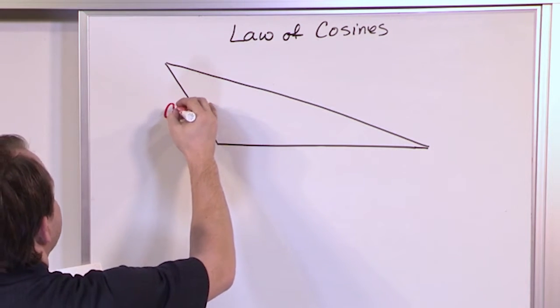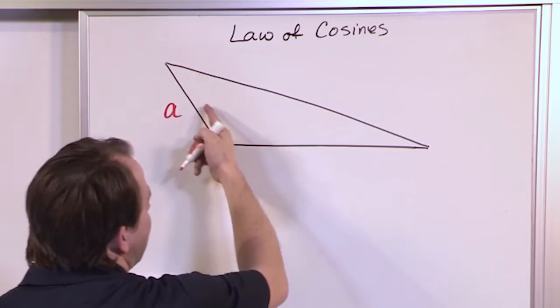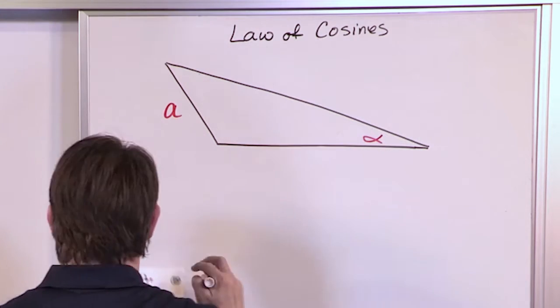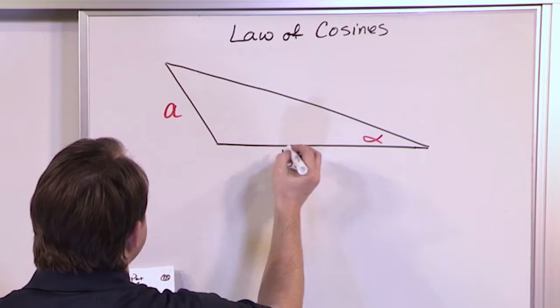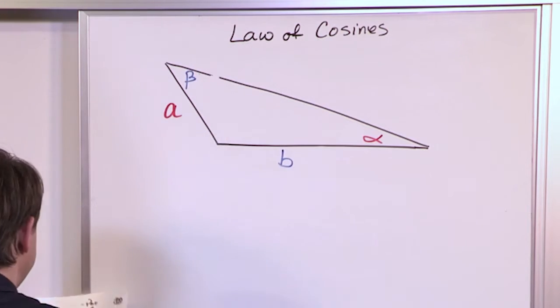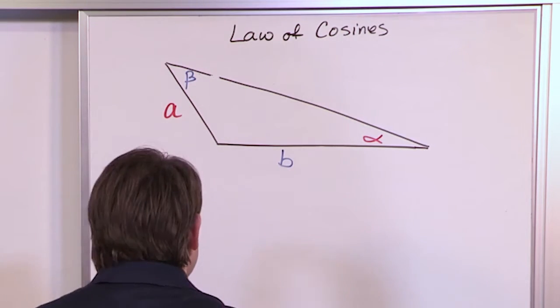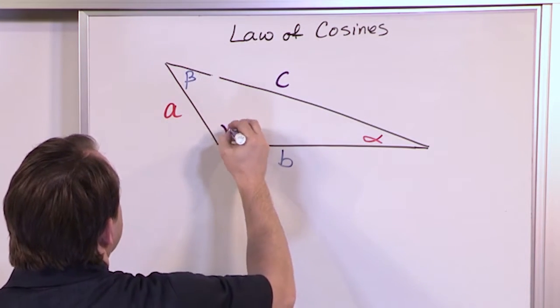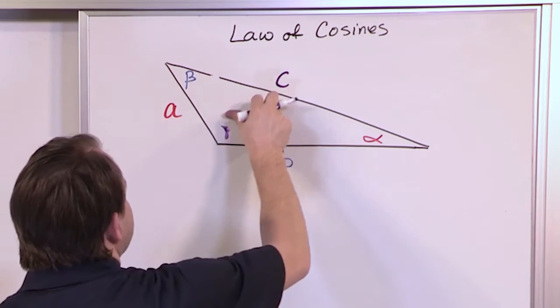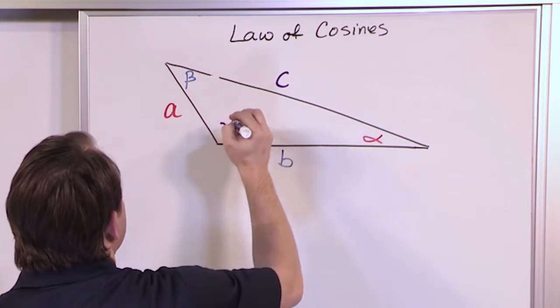What I'm going to do is label this side A and the opposite angle here I'm going to label alpha. And then in a different color I'll label this B and the opposite angle beta just like last time. And then finally we'll have side C with gamma, which is what this guy is supposed to be down here.